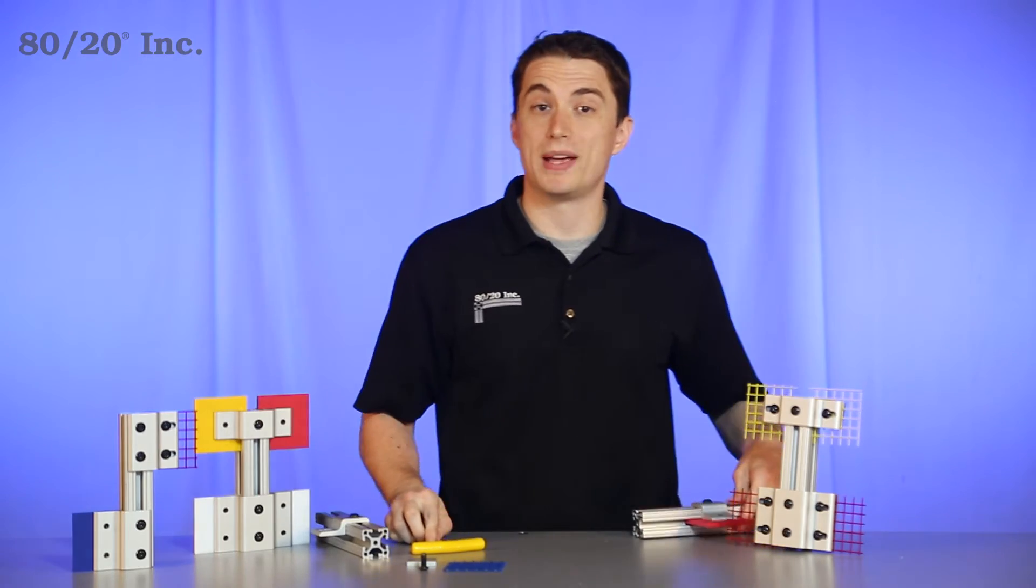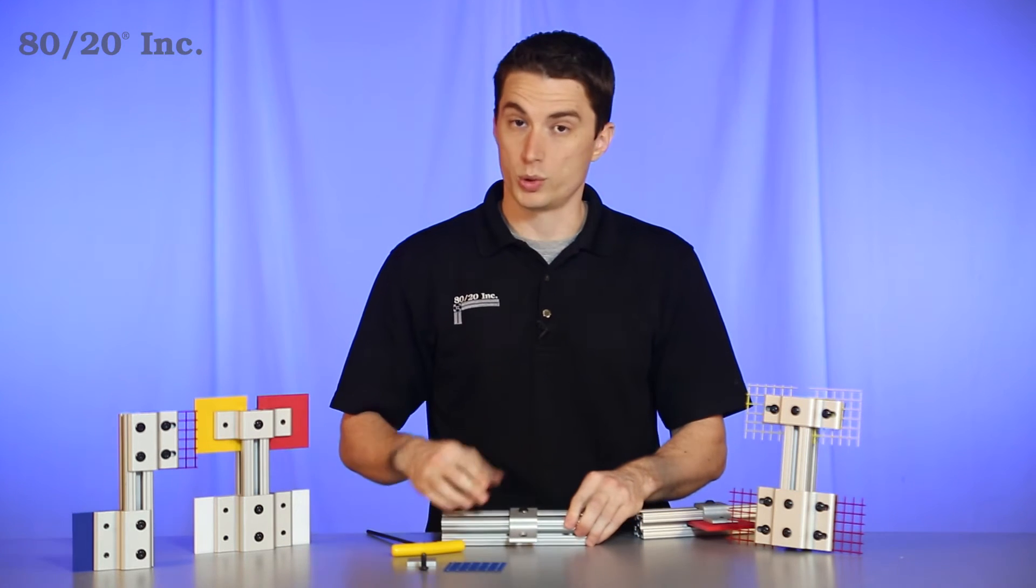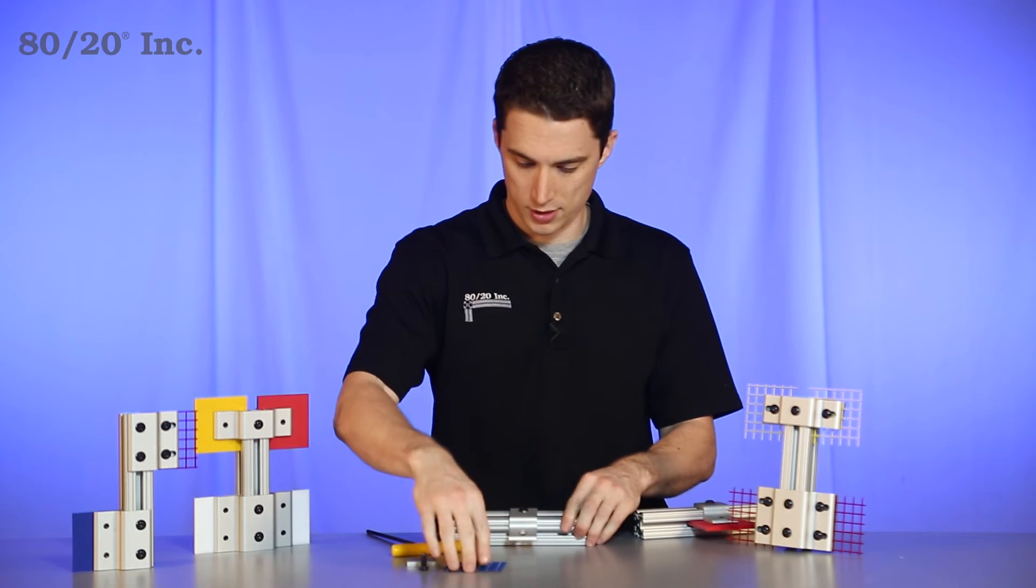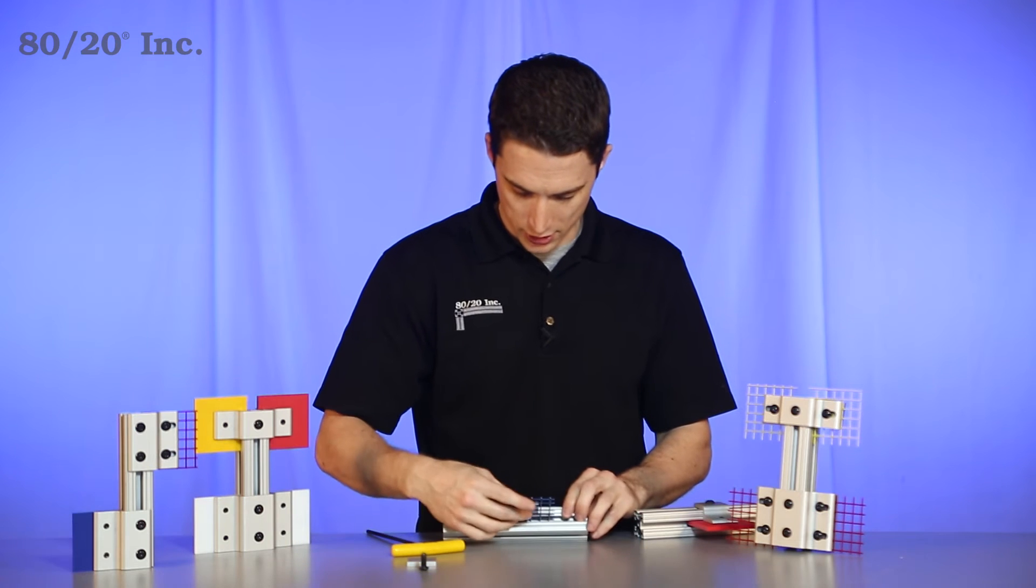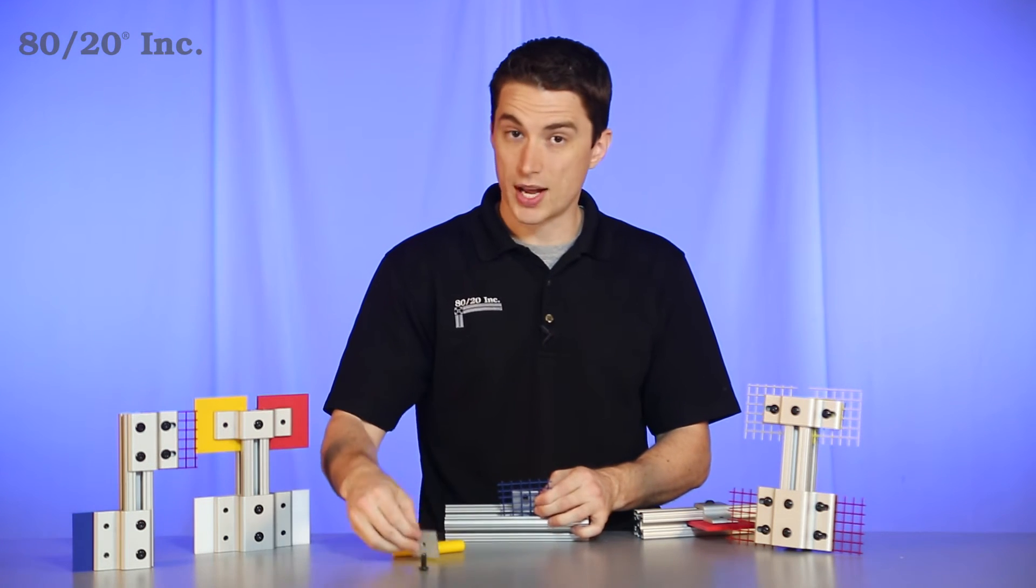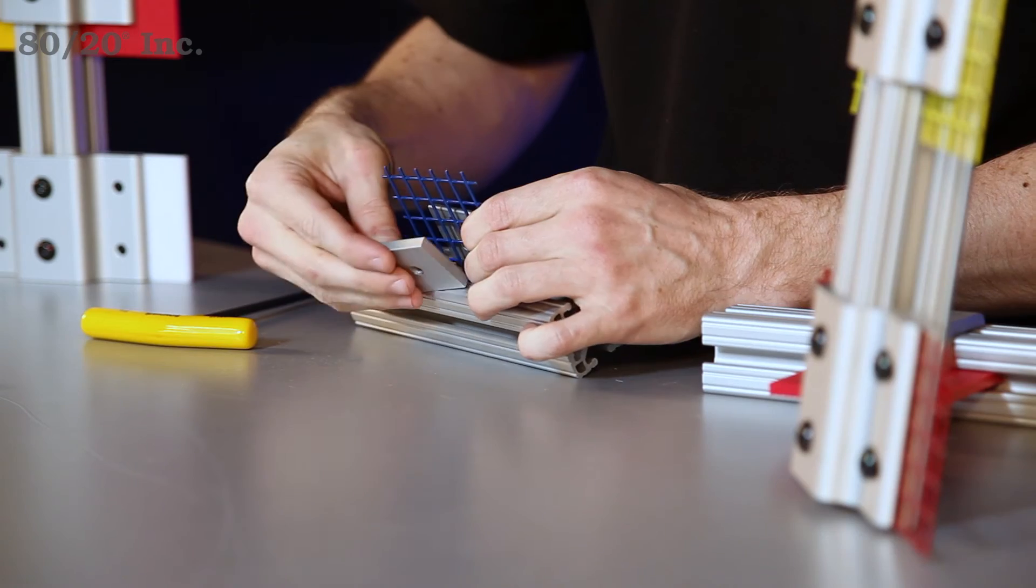Now mesh retainers work basically the same with one small difference. You have your retainer locked into place. Take your mesh, slide it into the open T-slot. This time you'll take a backing plate and put it on the other side of the mesh.